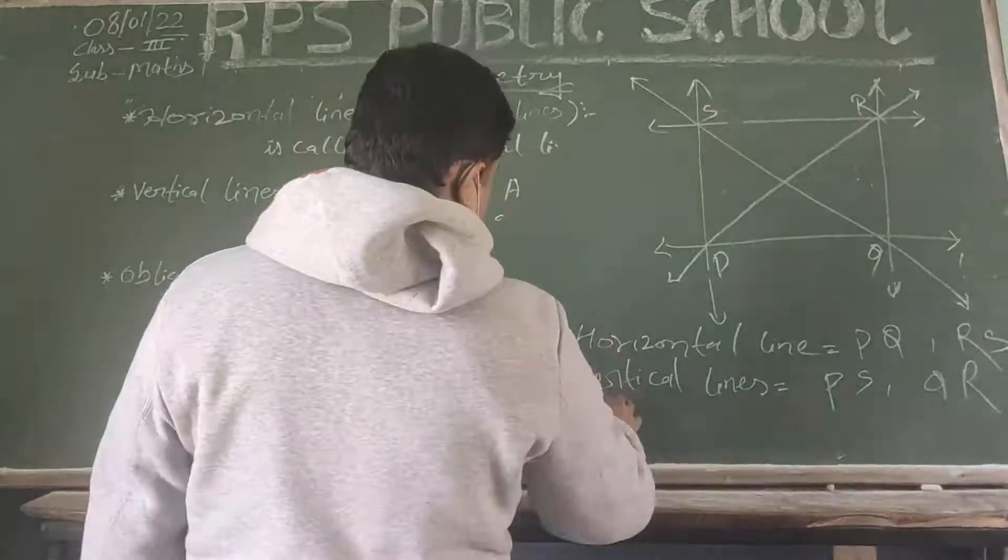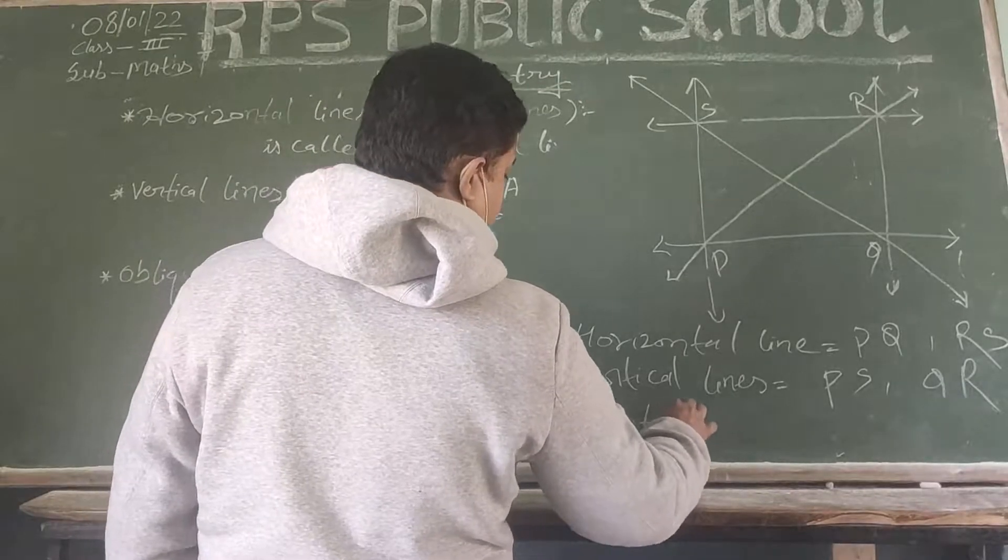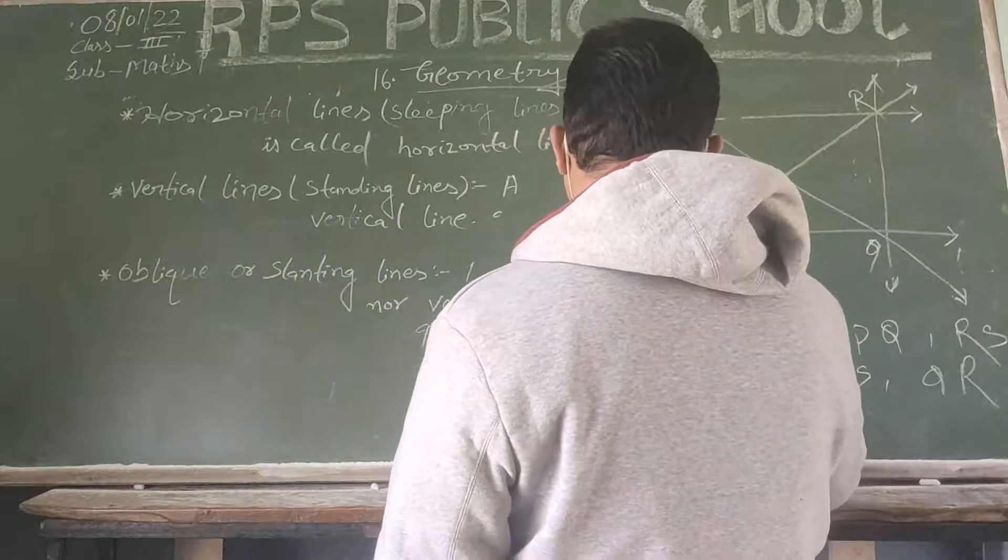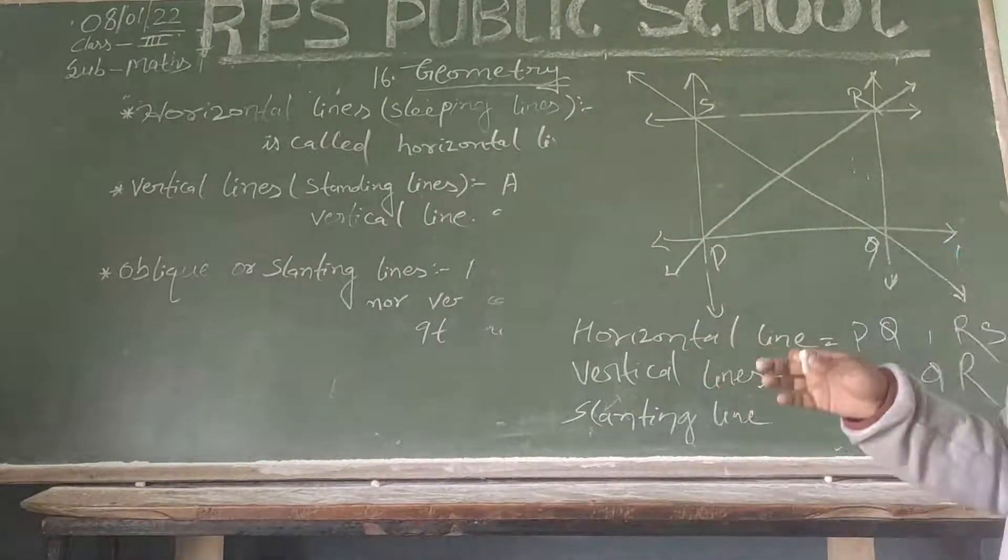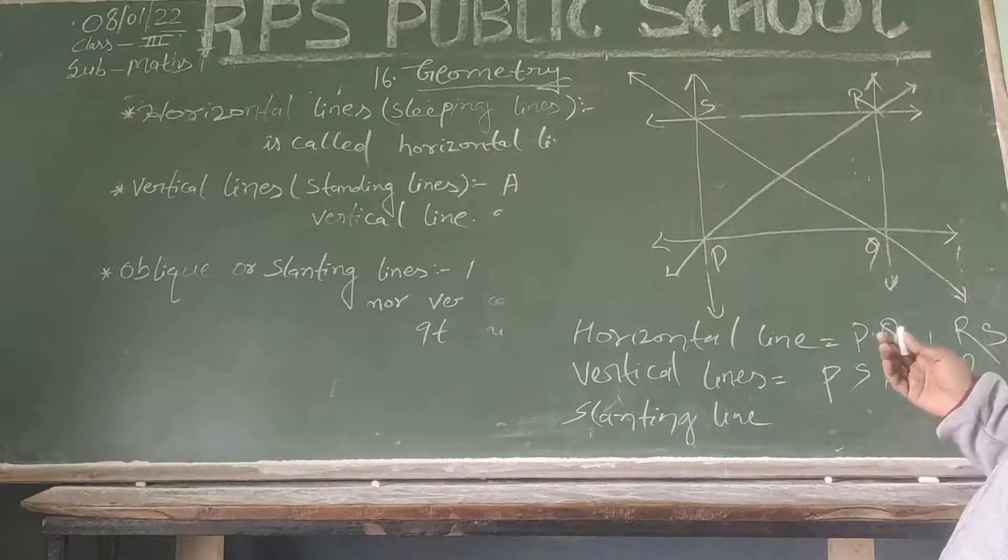Now, the slanting line. Slanting line is not horizontal, not vertical. It is neither horizontal nor vertical.